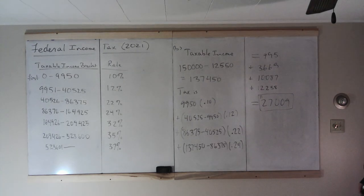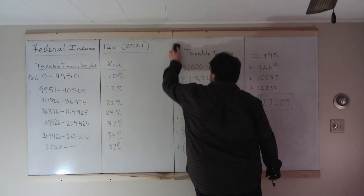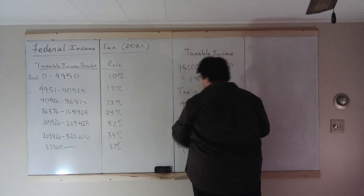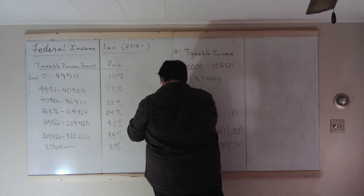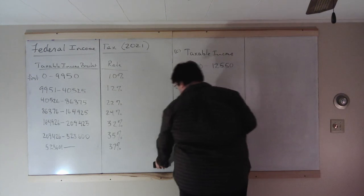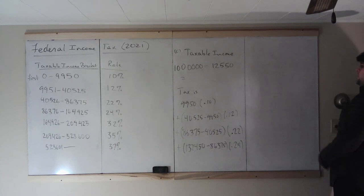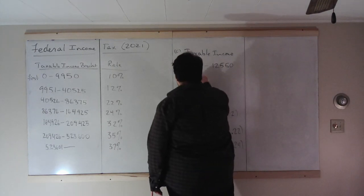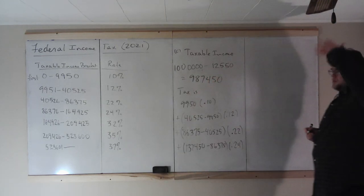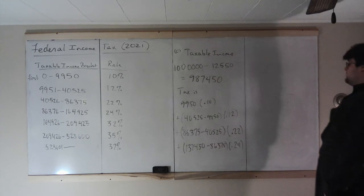Now, what about part C? Well, part C says a million. I'm going to take advantage of what I wrote for part B, because I am lazy. A million. First, we want to find the taxable income. A million minus $12,550 gives us $987,450. So notice this does put you in the last bracket, so some of your income is going to be taxed at each of those seven rates.